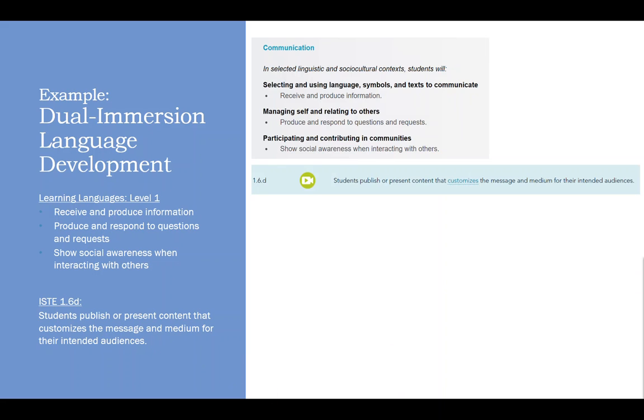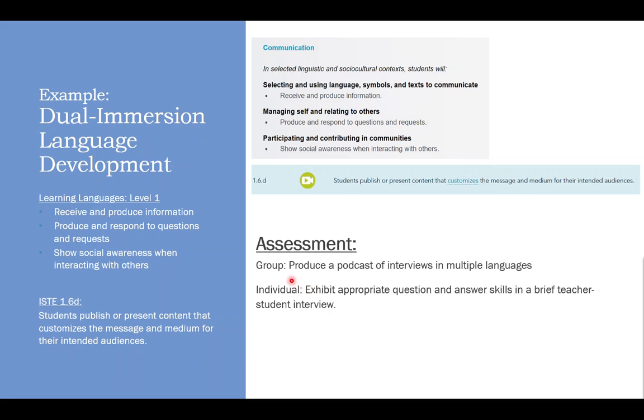The ISTE stuff is I want them to publish or present content that customizes the message and medium for their intended audiences. So that means we're going to have to be paying attention to the audiences of whatever we produce so we can customize the message for them. So an assessment that might align these two ideas could be that a group produces a podcast of interviews in multiple languages. So they're practicing interviewing in multiple languages, but they're also producing the podcast where they have to customize a message for an audience. I might add to that an individual assessment where I have a brief teacher interview and I see if they can engage well in question and answer skills. So in this case, I might choose to do both.